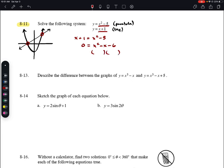We'll factor that. We have (x minus 3)(x plus 2). So x equals 3 and x equals negative 2.